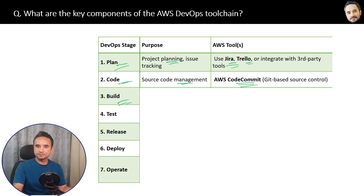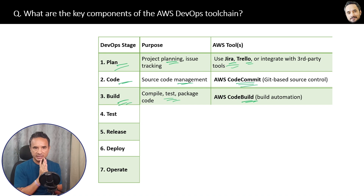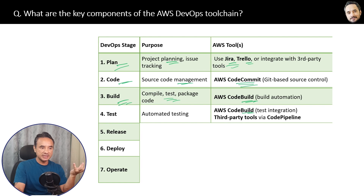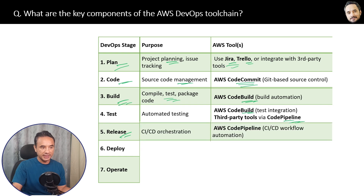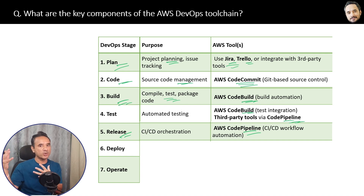Once planning is done, developers write code. For that, you have AWS CodeCommit, which is a Git-based service to safely store and manage your source code. Next is the build phase, where you have AWS CodeBuild, which compiles, tests, and packages the code to prepare the application for deployment. For the testing phase, you can again use CodeBuild along with CodePipeline to handle code testing.